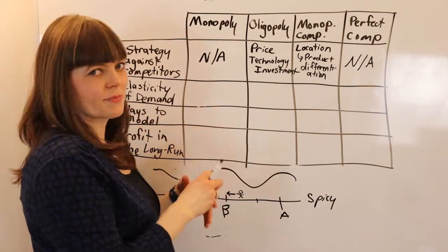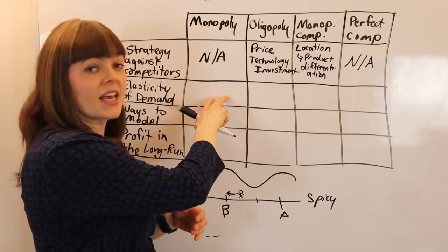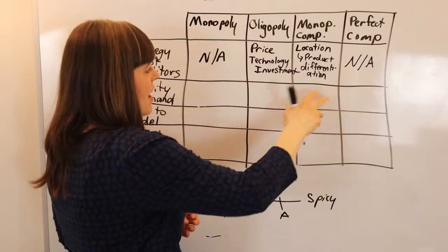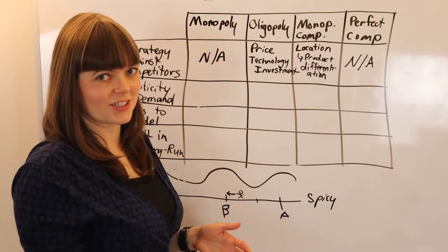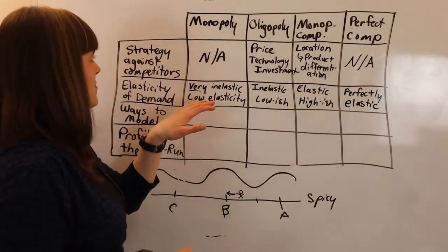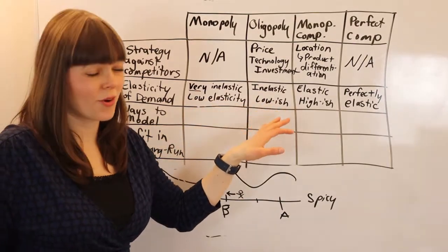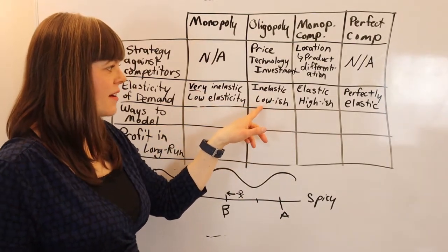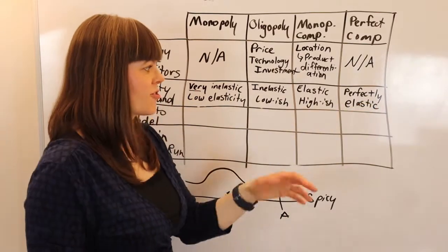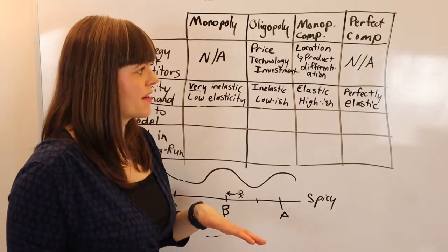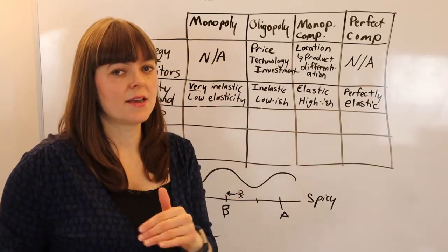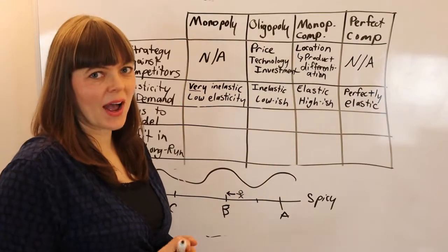When we think about elasticity of demand: monopolies have the most inelastic demand, perfect competition has perfectly elastic demand, and the other two are in between. Oligopolists have a pretty inelastic — lowish — elasticity of demand. Monopolistic competition has a fairly elastic demand because there are lots of substitutes and firms can enter and exit, giving a highish elasticity, but not perfectly elastic. Perfect competition has a perfectly elastic, flat demand curve.